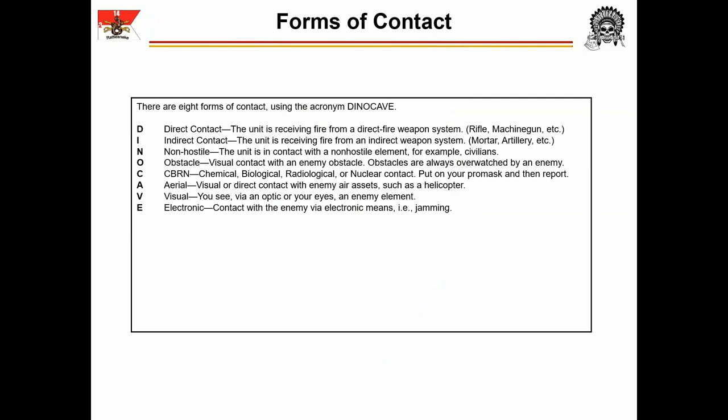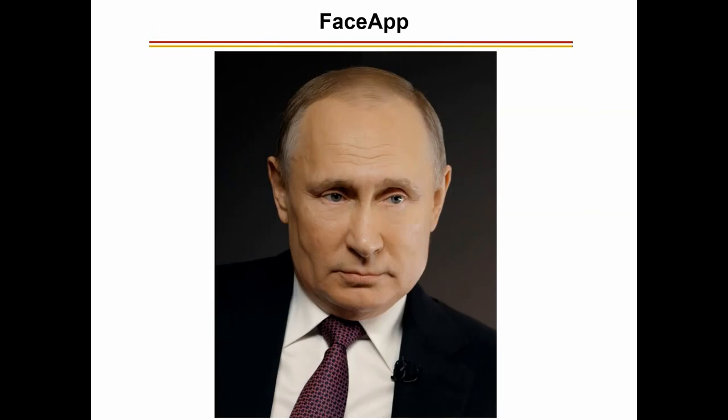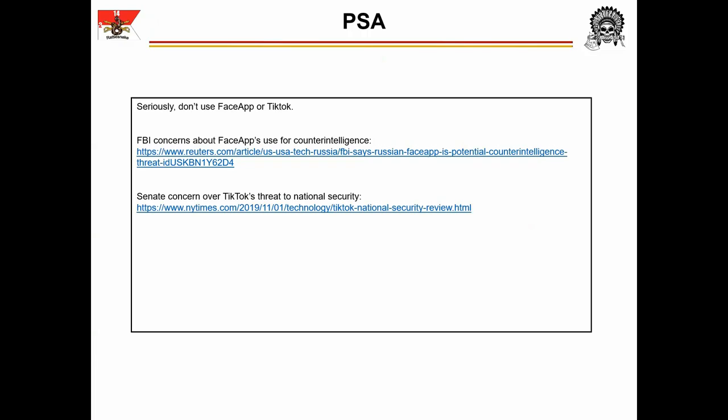Put on your pro mask and report. Aerial contact is visual or direct contact with enemy air assets, such as a helicopter. Visual contact is contact with either an optic or your eyes of an enemy element. And finally, electronic contact is contact with the enemy via an electronic means — for example, jamming. For the average soldier, electronic contact refers to jamming.